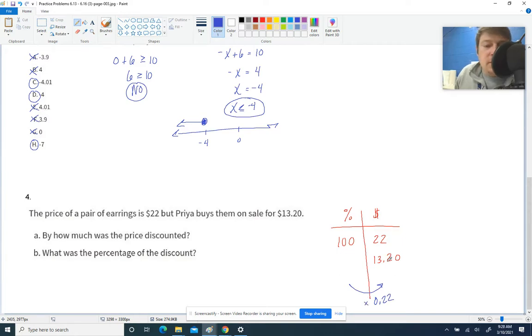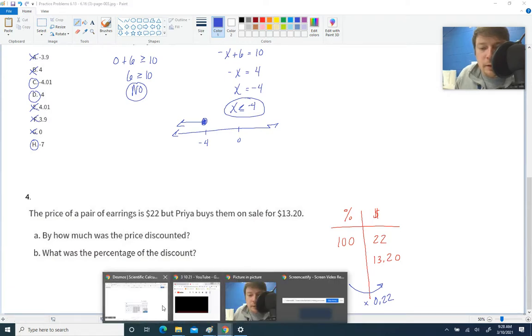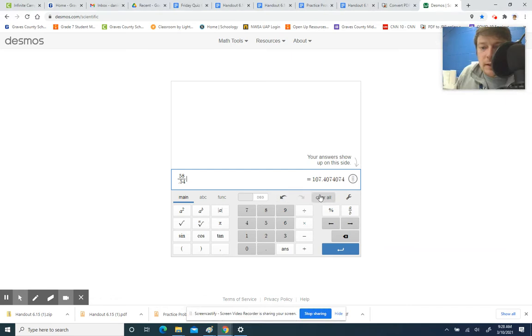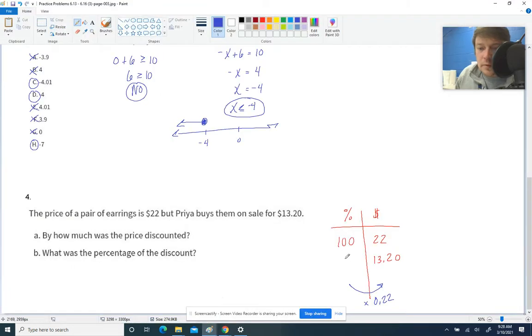To find out how much it was discounted, let's divide $13.20 by $22. Let me pull up my calculator. $13.20 divided by $22.00 - that's 60%. So if it went from 100% full price to 60% of its price, this is a 40% discount. You can see the drop is clearly 40%. So it was 40% off.